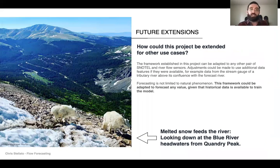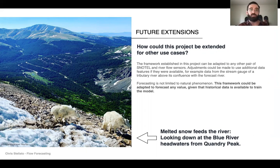How could we extend this project in the future? This framework could be used and adapted to any pair of Snotel and river flow sensors. You could also add additional data points like stream gauges from tributary rivers. Overall, a time series forecasting model like this could be adapted to forecast any value in any system, given that there's enough historical data available to train the model.